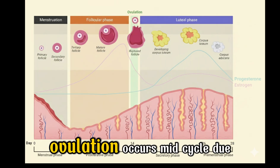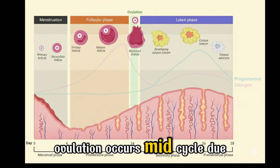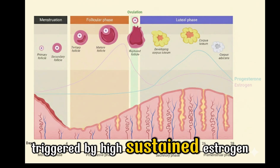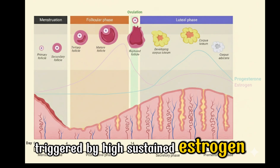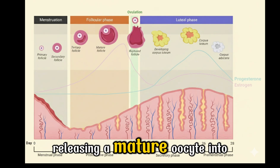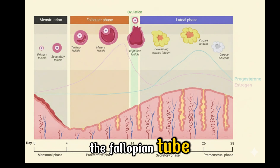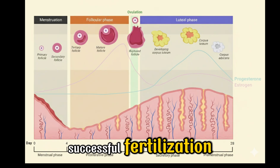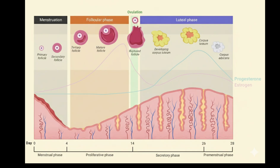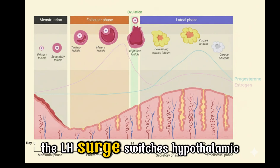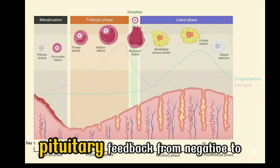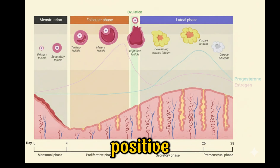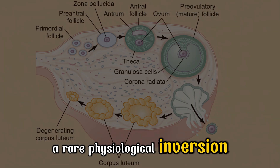Ovulation occurs mid-cycle due to the LH surge triggered by high, sustained estrogen, releasing a mature oocyte into the fallopian tube. This precise timing is crucial for successful fertilization. The LH surge switches hypothalamic-pituitary feedback from negative to positive — a rare physiological inversion.